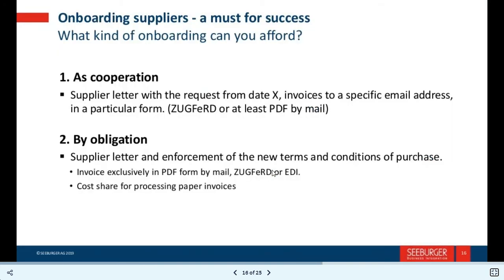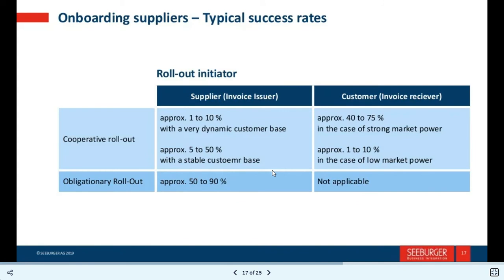The fourth stumbling block is onboarding suppliers. A must for success — what kind of onboarding can you afford? Cooperation approach: a supplier letter requesting that from a specific date, invoices are sent to a specific email address in a particular form such as ZUGFeRD or at least PDF by email. Obligation approach: enforcement of new terms and conditions for purchase — invoice exclusively in a specified form by email or EDI, with cost sharing for processing paper invoices.